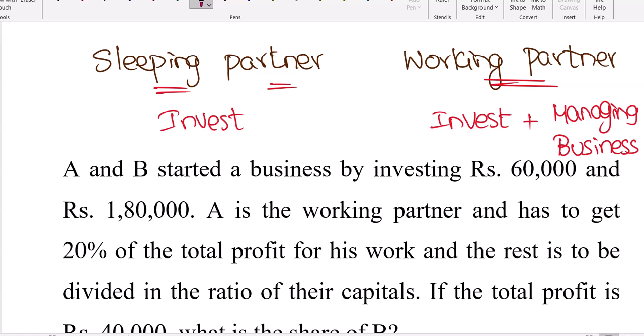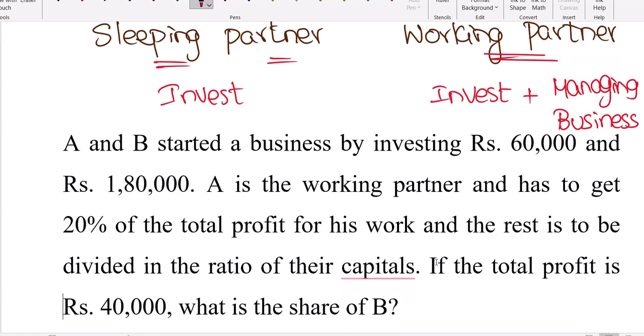A and B started a business by investing Rs. 60,000 and Rs. 1,80,000. That is what they are doing investments. A is working partner and has to get 20% of the total profit. See, if it is a working partner, for managing the business, you can do two things.